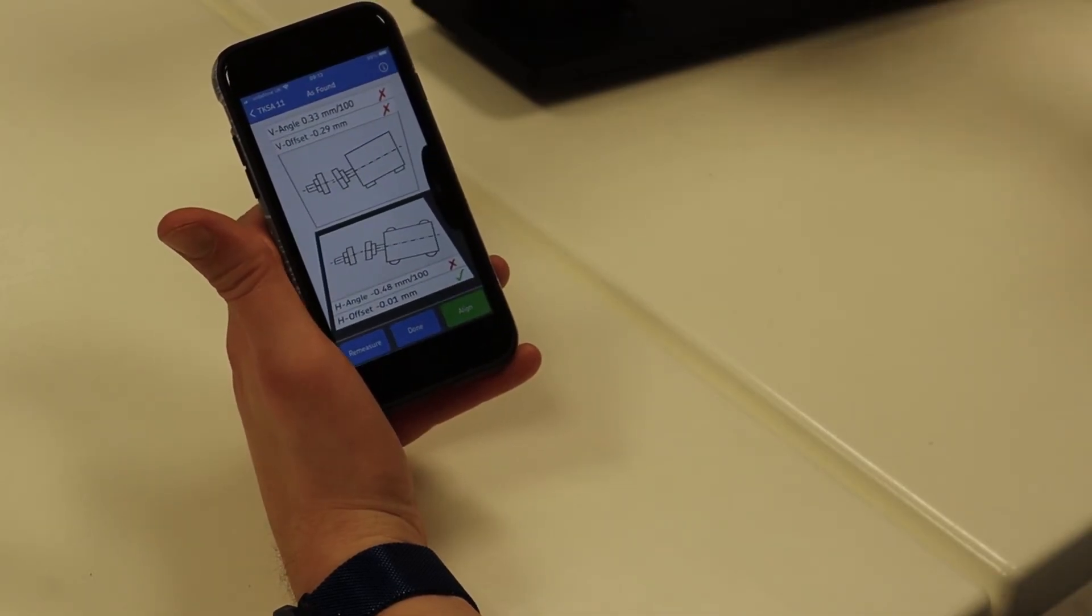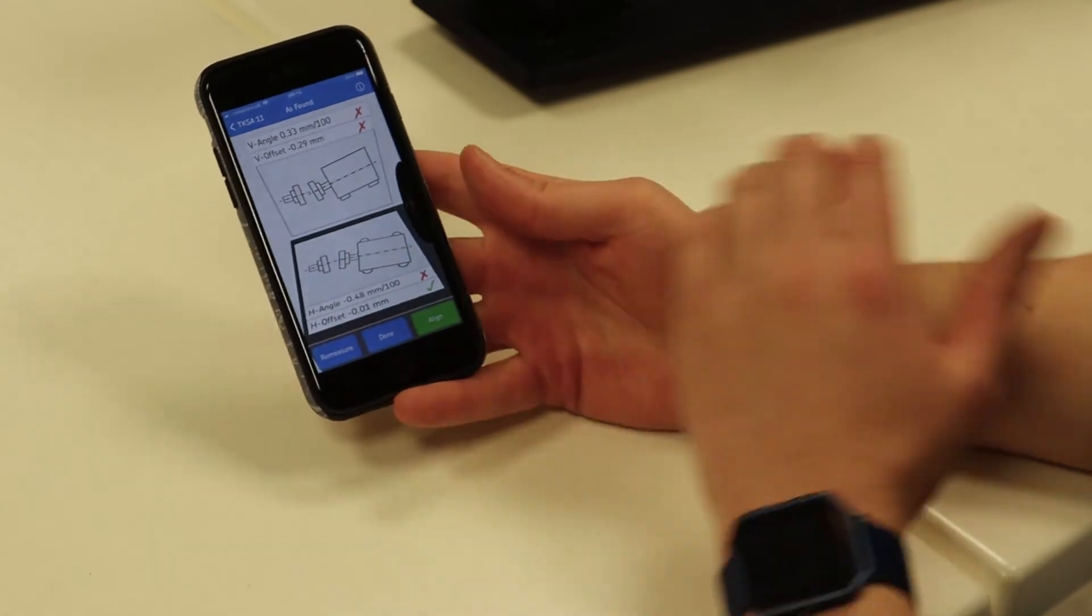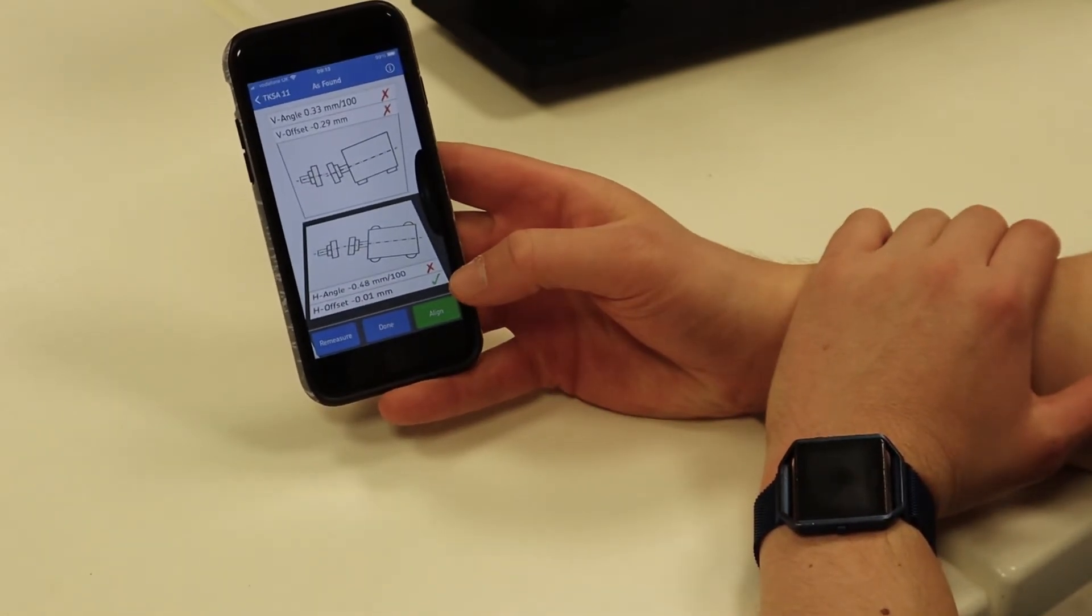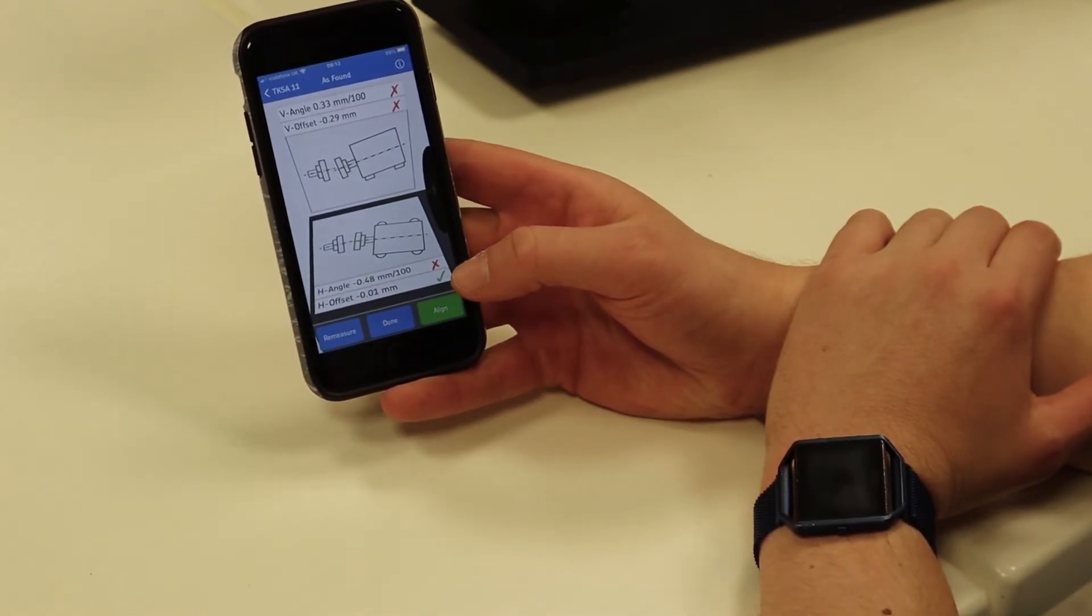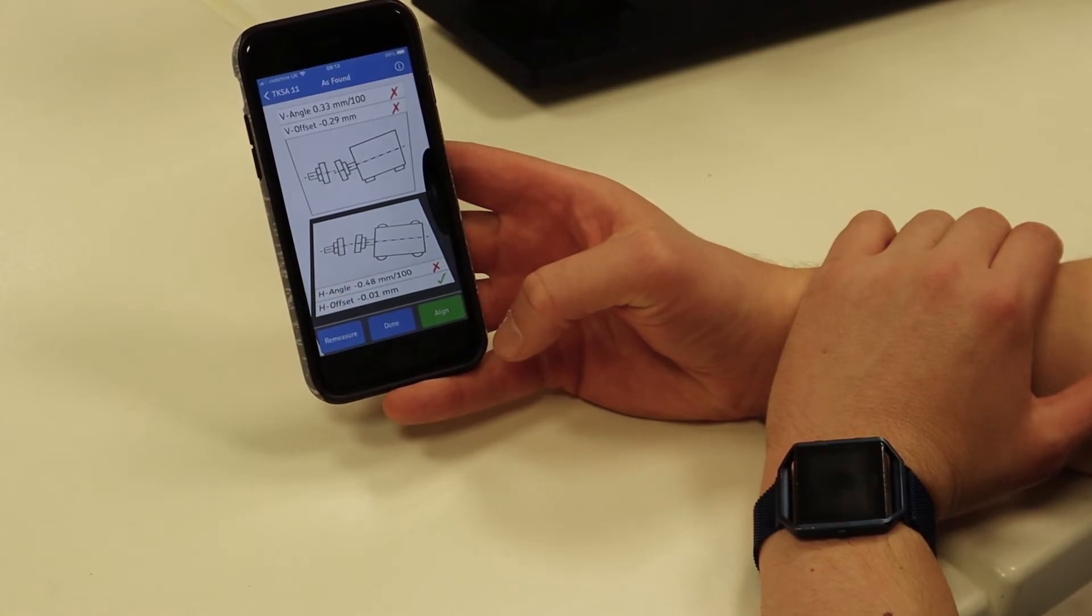So this gives me my set of initial measurements. You can see we've got one ticking green and three other factors that are out.